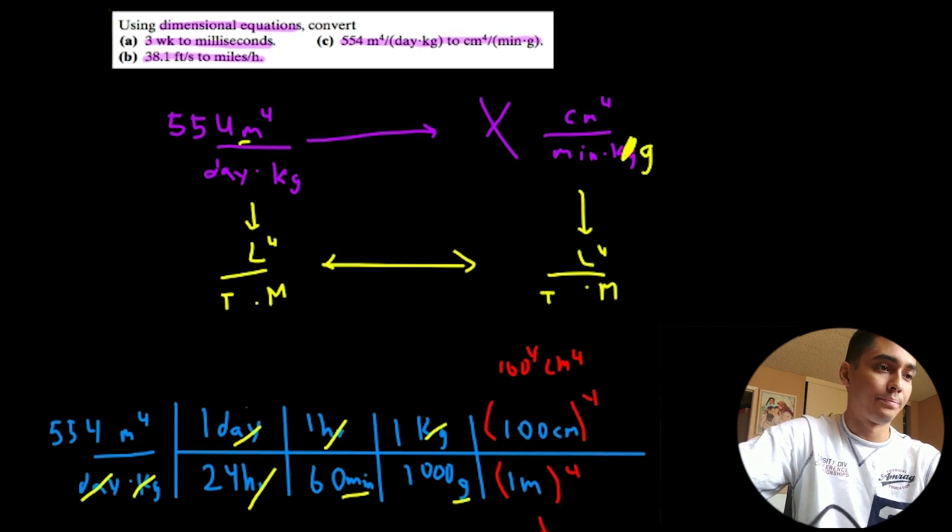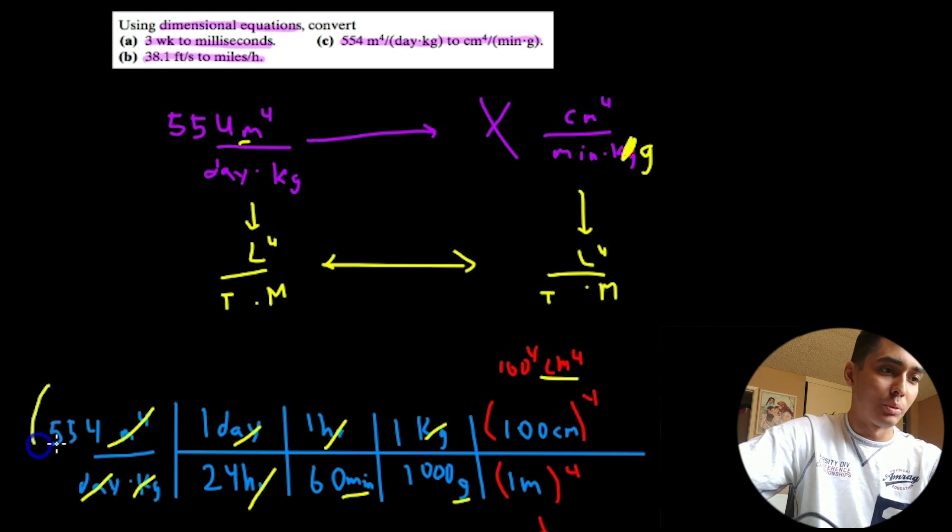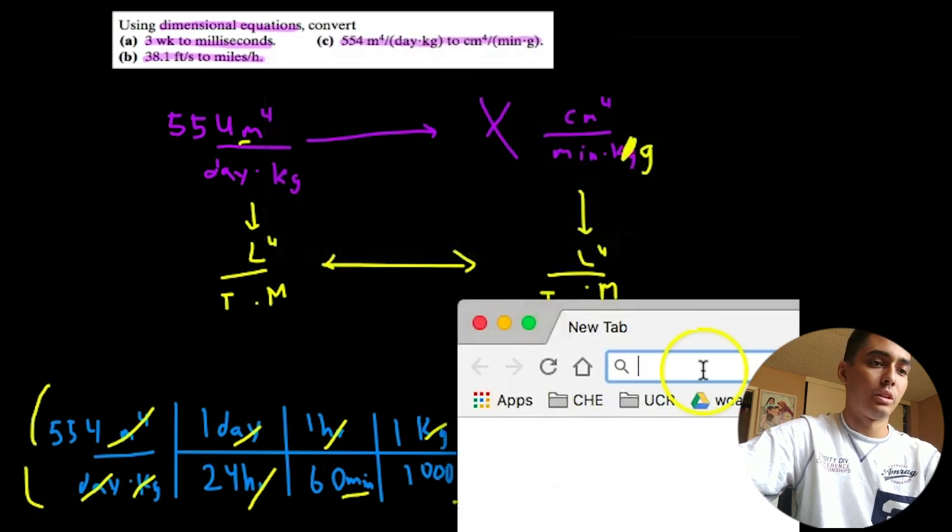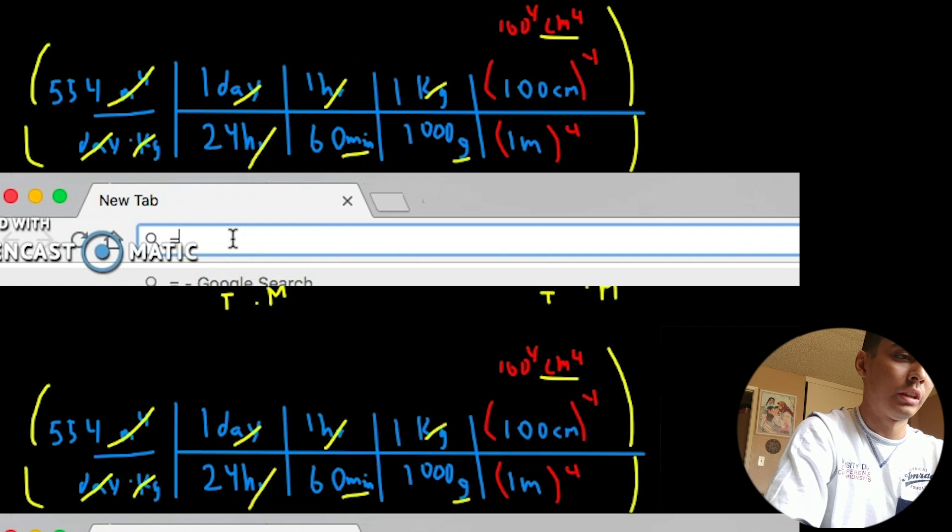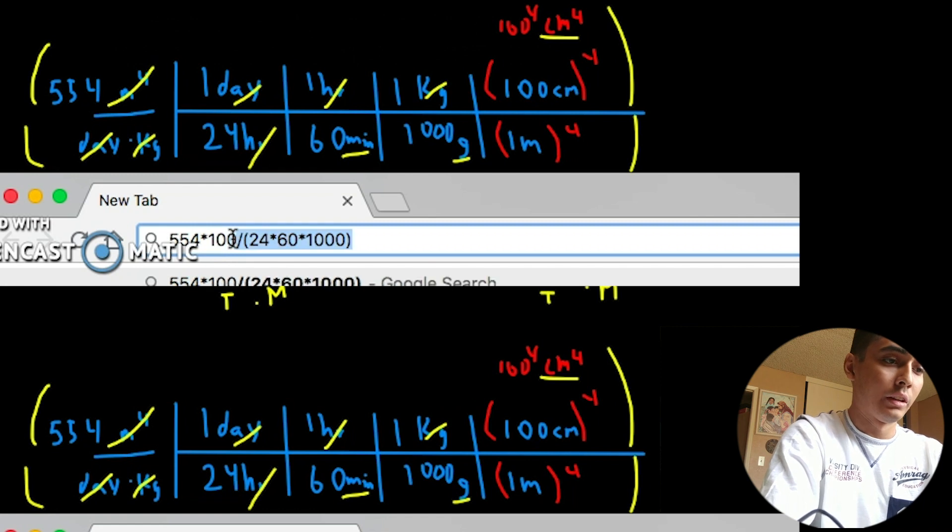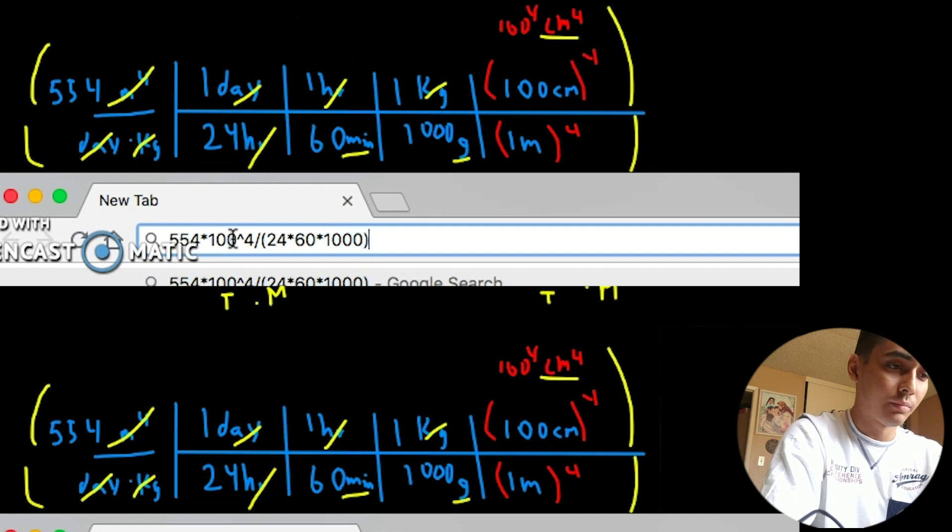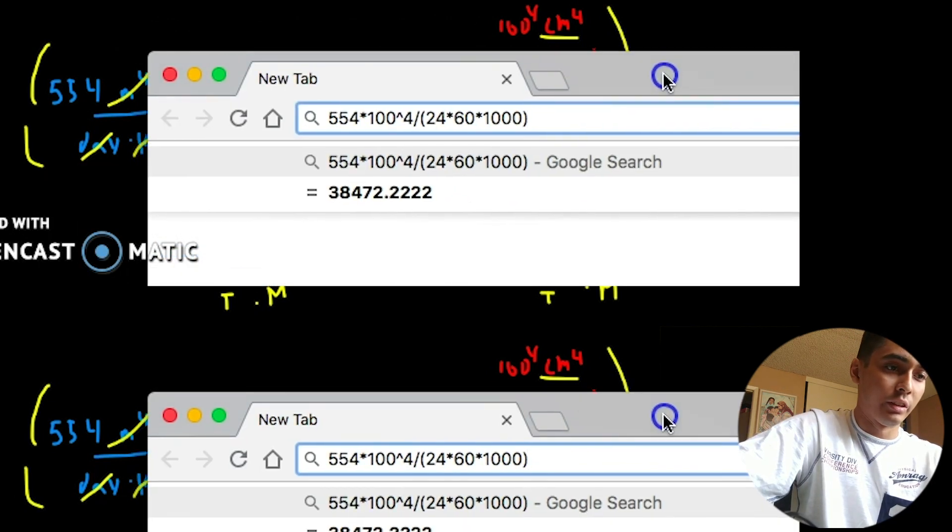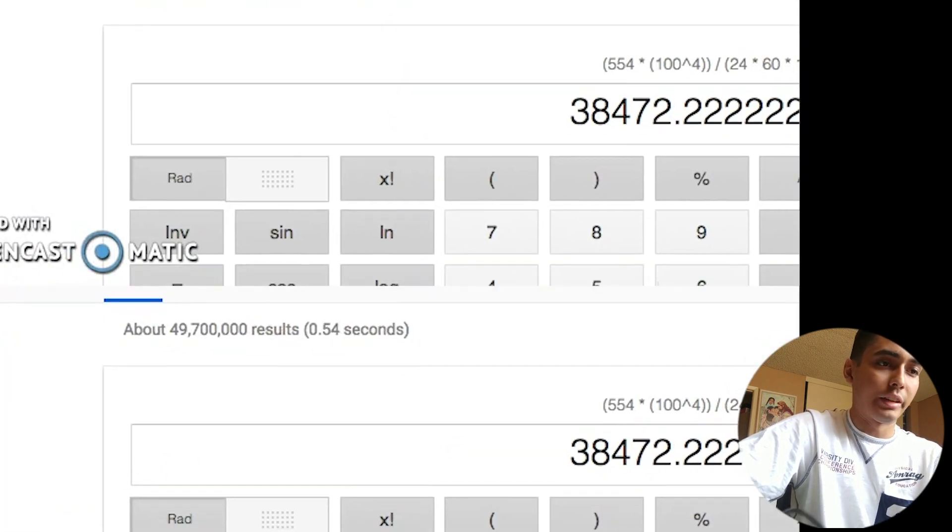And finally, we can cancel out meters to the fourth. And we're left with centimeters to the fourth. So, again, now, let's calculate this guy and let's multiply everything on top divided by everything on the bottom. Just to make things easier. So, equals, we don't need the equals. 554 times 1 day times 1 times 1 times 100 to the fourth power. I already did this problem, I'm sorry, guys, divided by 24 times 60 times 1,000.